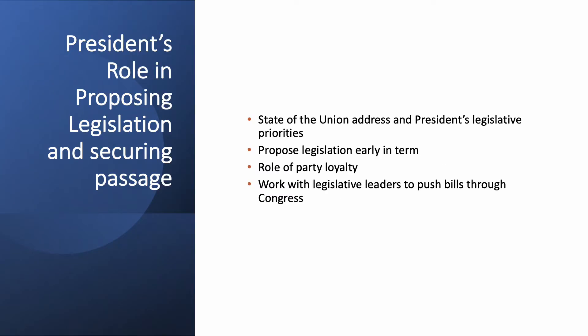Presidents often propose legislation in the State of the Union address, stating their legislative priorities. They usually try to do it early in their term because important initiatives take time to get passed. It's obviously because they have to get through Congress — they need their party behind them. When they don't, or even if just a few members of their party are not helping them, it can disable their ability to get legislation passed. Presidents can often do whatever they want in foreign policy, but in domestic policy, it's not that way — they need Congress.